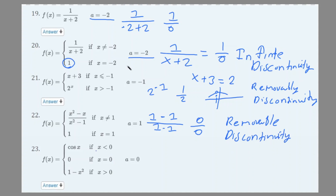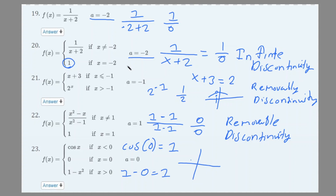Number 23 is a piecewise function with 3 sections: anything to the left is cosine, f(0) = 0, and anything to the right is 1 − x². We plug 0 into 1 − x²: 1 − 0 = 1. And cosine(0) = 1. So from the left and right side, as it reaches x = 0, both sides reach 1. But f(0) = 0, so that is also a removable discontinuity.